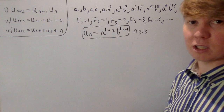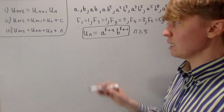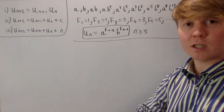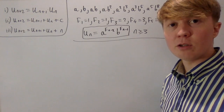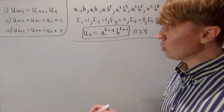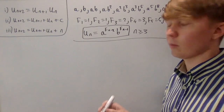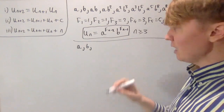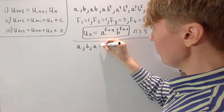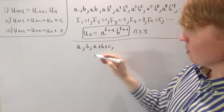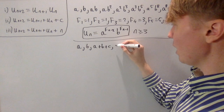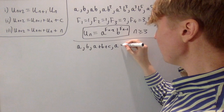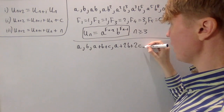We'll go through the first two examples quite quickly and deal with the third one in more detail. For our second sequence, instead of just adding the previous two terms, we add the previous two terms and also add a constant term c each time. Starting with a and b, the next term is a plus b plus c. Then we do b plus (a plus b plus c) to get a plus 2b plus c, and adding another c gives a plus 2b plus 2c.